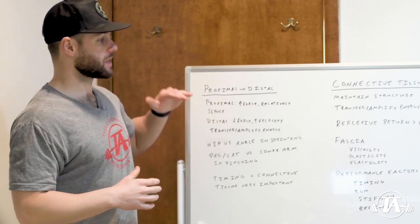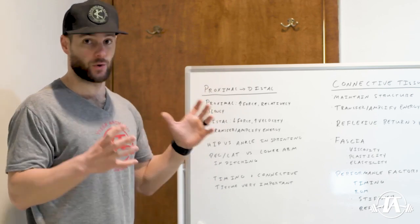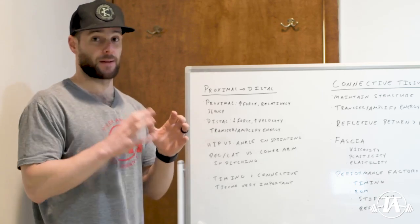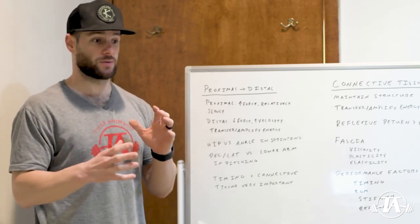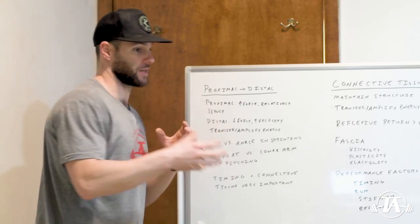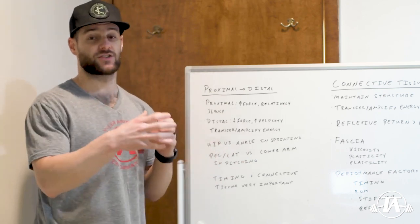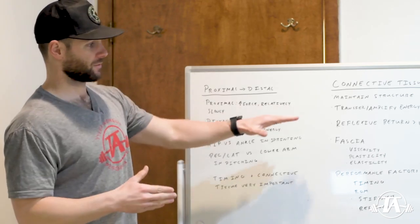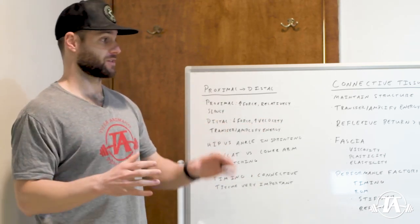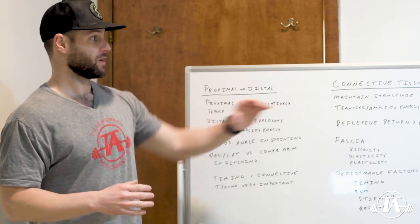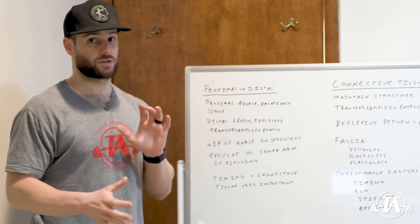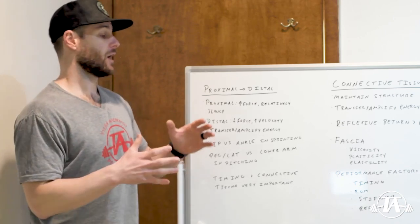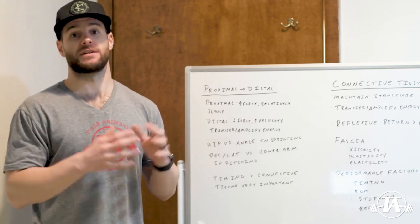When we're talking about connective tissue and throwing velocity, the key is this reflexive return we get when we properly utilize connective tissue — this stretch and return, or storage and utilization of elastic energy. What we get from this reflexive return is greater in both velocity and force than we could get from volitional movement. If we can utilize connective tissue correctly, we're talking about a much greater potential for throwing velocity than if we look at it purely as a muscle-driven movement.